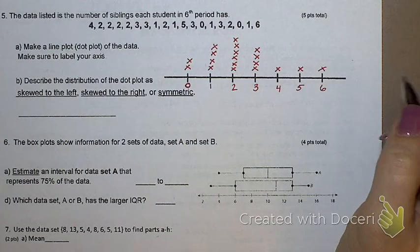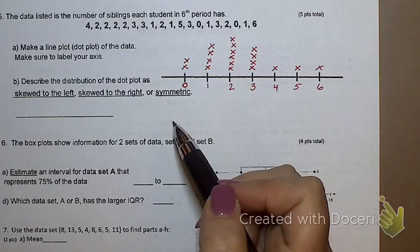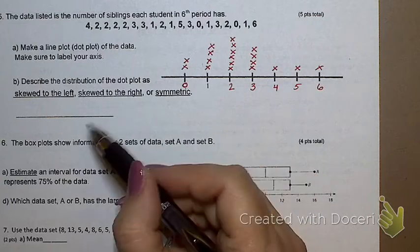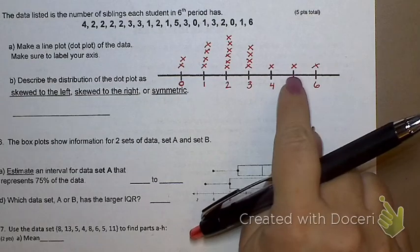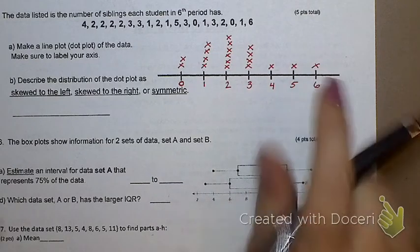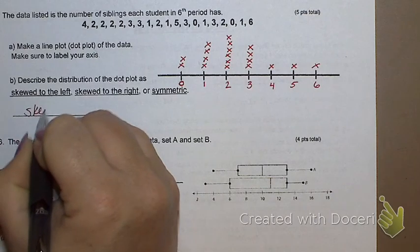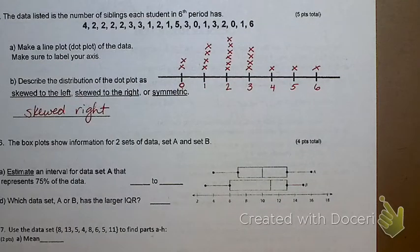This may have been a little bit petty to you, but I did go and count your dots. There should have been two here, four there, six there, four there, and then one, one, one. Make sure your dots are accurate. Again, I don't care if you use X's or dots, just make it accurate. Describe the distribution of the dot plot as skewed to the left, skewed to the right, or symmetric. Well, this does not look symmetric to me, because there is definitely a lower end over here. This end would be what we call the tail. If the tail is on the right, what does that mean? It is skewed right. The direction of the skew is where the tail is.